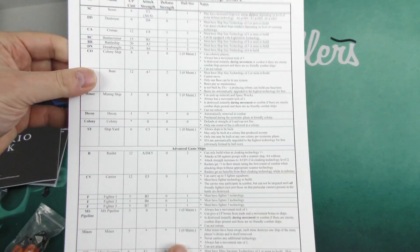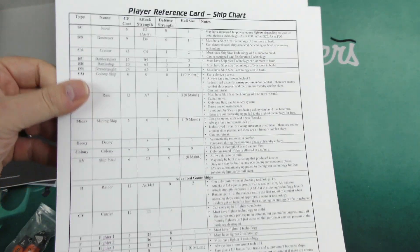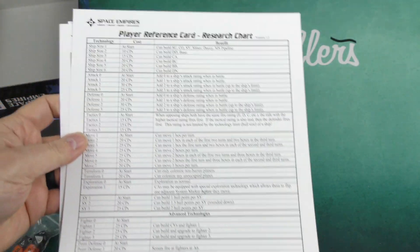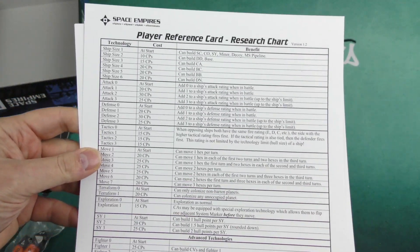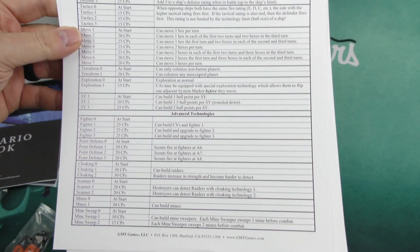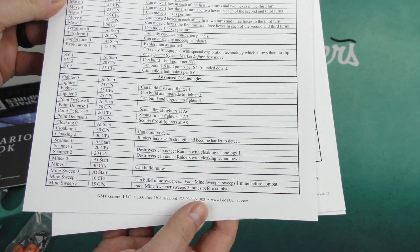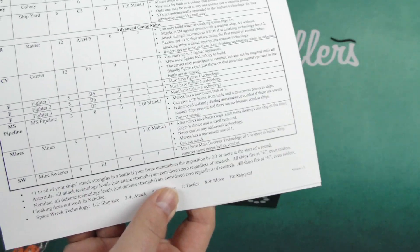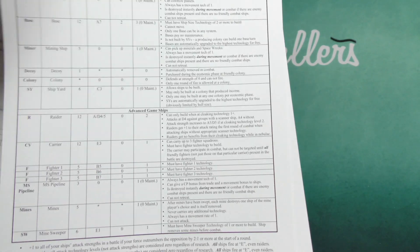Here we've got our player reference cards, here's our ship chart and our research chart, and you can see there's a lot of information there. I believe these are all the same, there's just four of them.